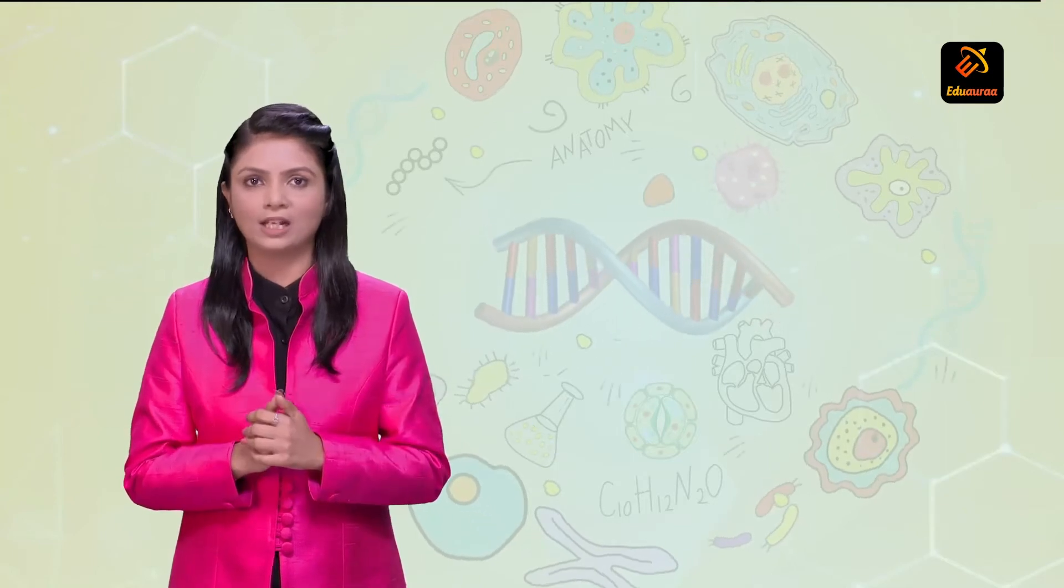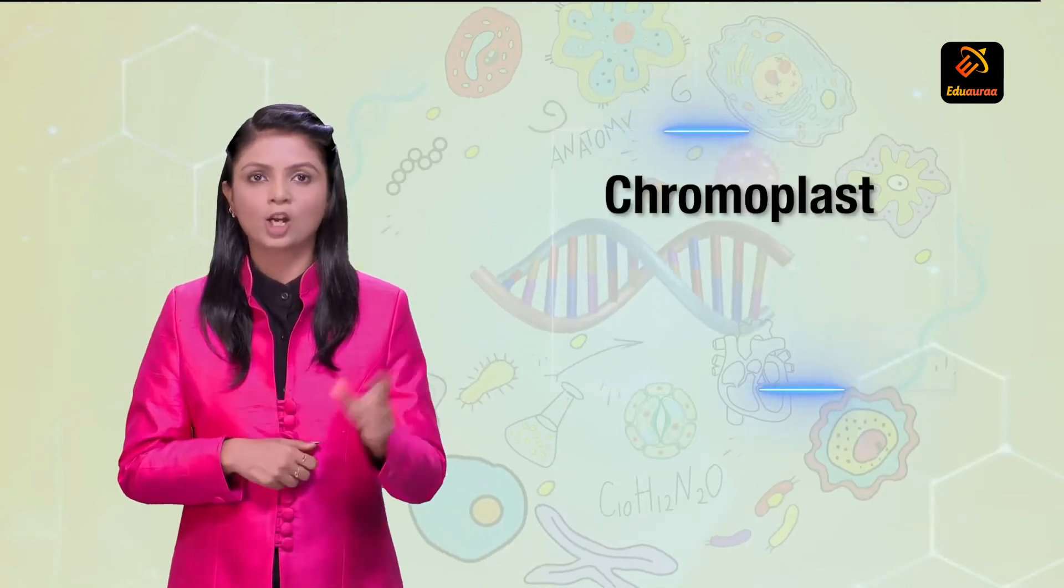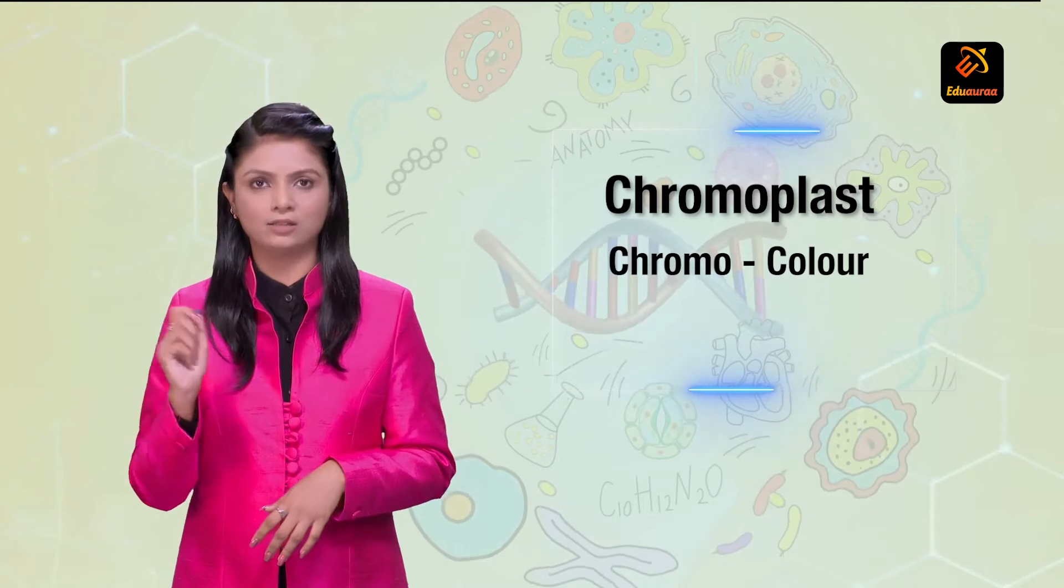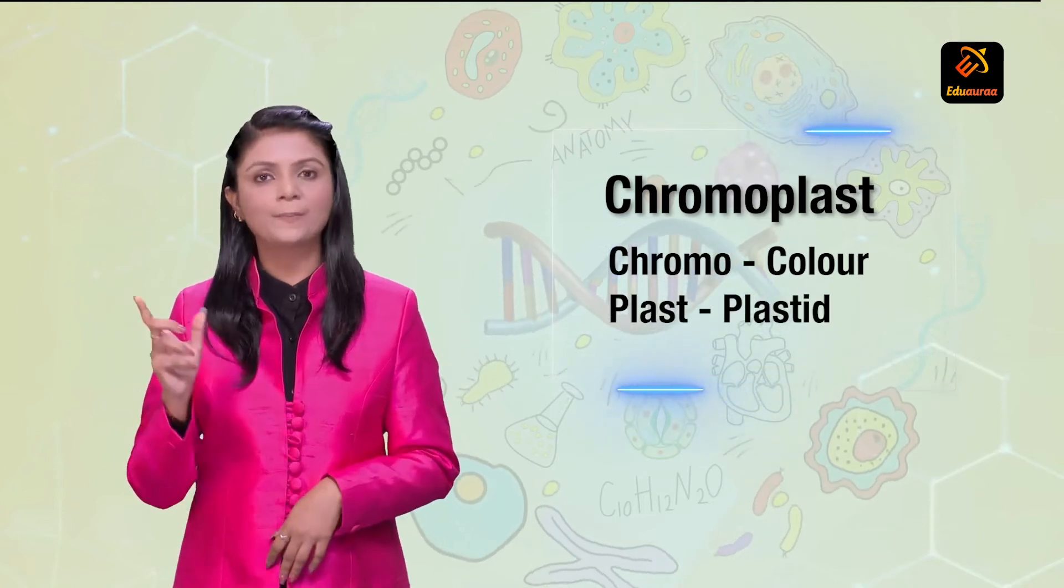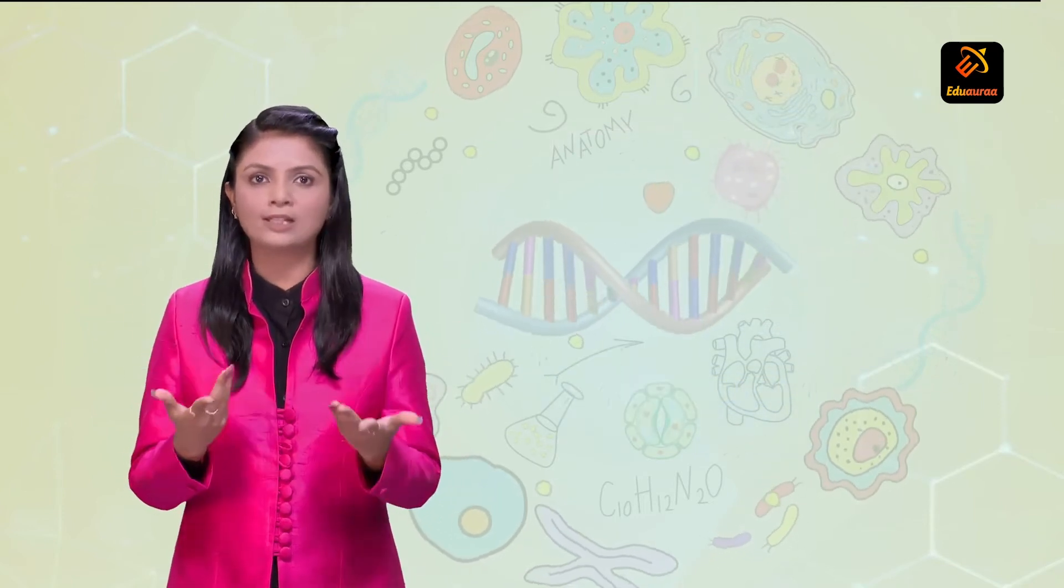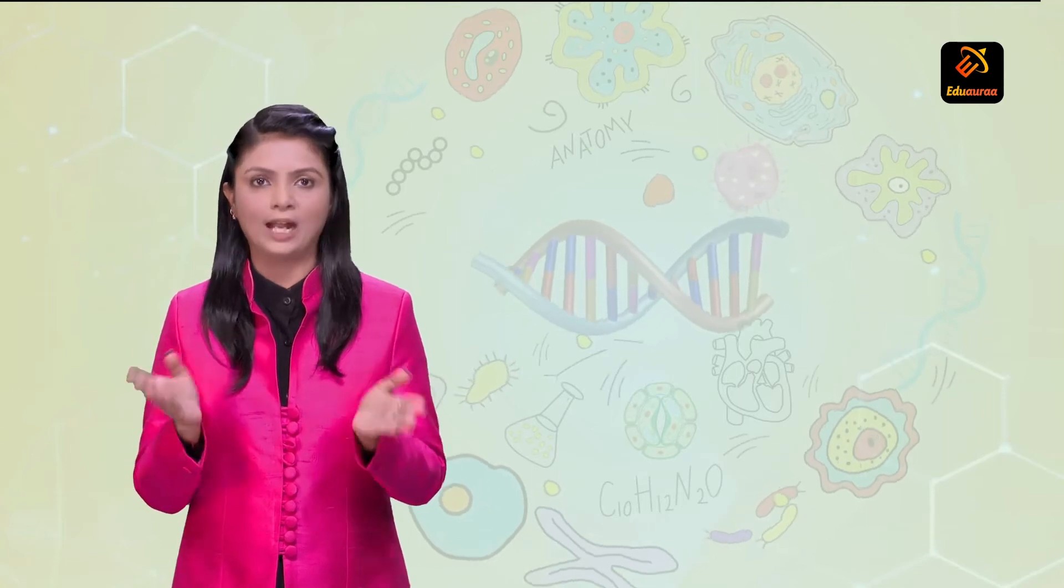Let's look at the next kind of plastid. Chromoplast. Chromo means color. Plast means plastid. It is responsible for giving color to the plant.